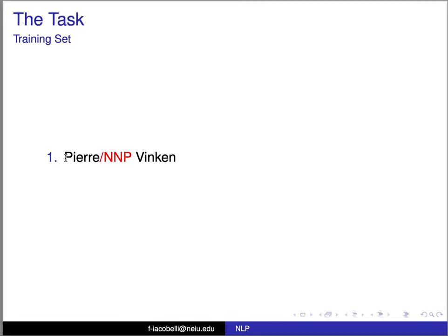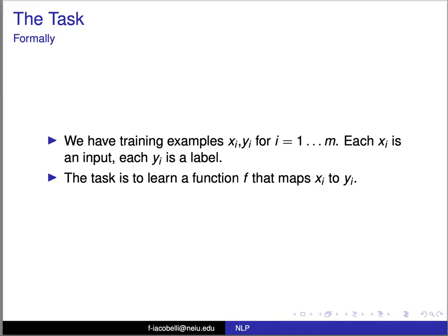The training set basically looks like a bunch of sentences with their tags next to them. The task is: we have multiple training examples — X for the sentence and Y for the labels. We have training examples with a bunch of words and a label for each one of those words. The task is to learn a function that, when given a bunch of words, can give you a sequence of tags corresponding to that sequence of words.